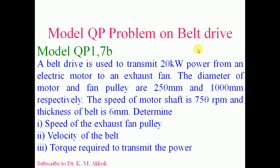I am going to solve one problem on belt drive from a VTU model question paper. The problem is that a belt drive is used to transmit 20 kilowatt of power from an electric motor to an exhaust fan. The diameter of the motor and fan pulley are 250 mm and 1000 mm respectively. The speed of motor shaft is 750 rpm and the thickness of belt is 6 mm. Determine: first, the speed of exhaust fan pulley; second, velocity of the belt; third, torque required to transmit the power.